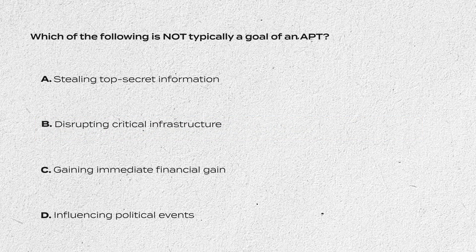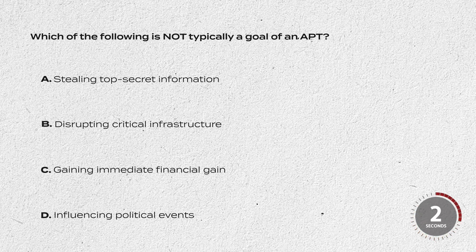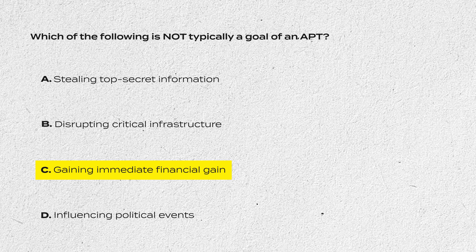Question 2: Which of the following is not typically a goal of an APT? A: Stealing top secret information. B: Disrupting critical infrastructure. C: Gaining immediate financial gain. D: Influencing political events. The answer is C — gaining immediate financial gain. APTs are usually focused on long-term strategic goals such as stealing sensitive information, disrupting key infrastructure or influencing political outcomes, rather than quick financial gains.